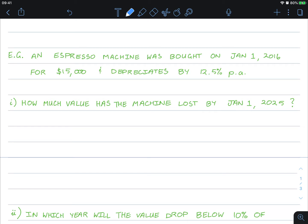So let's quickly summarize this. Our principal value is 15,000. Our rate, let's do this as a decimal, 0.125. Our n, well, how many years have passed since 2016 till 2025? That would be 9 years, so n is 9.